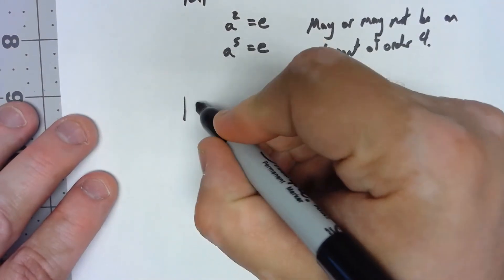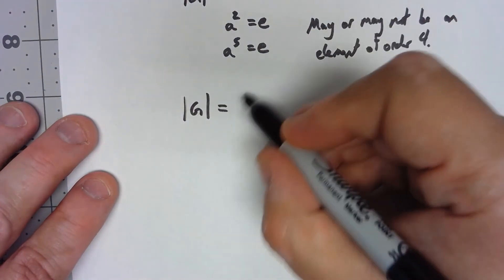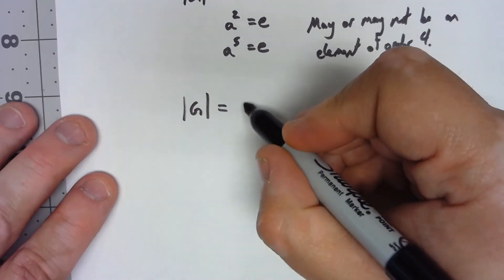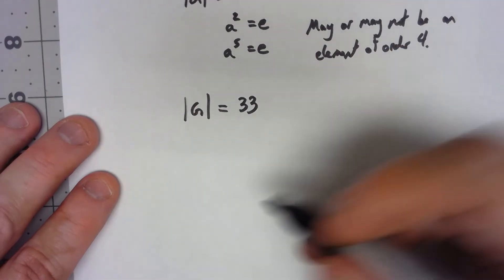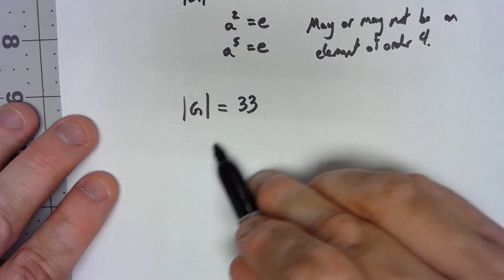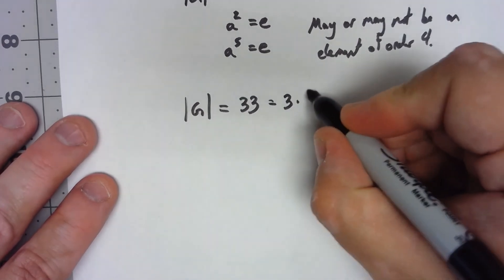Another simple little example, let's say I've got a group, the order of the group is equal to say 33. Now in this case it's interesting because the 33 is just 3 times 11.